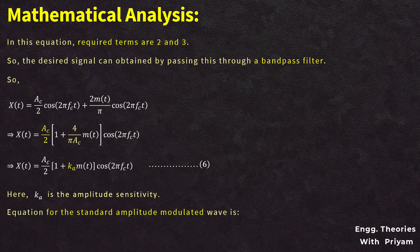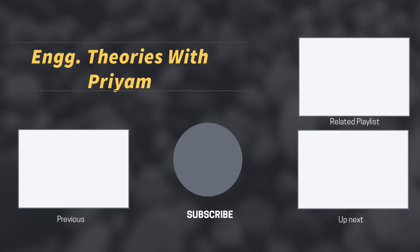The standard amplitude modulated signal is: s(t) = Ac·[1 + ka·m(t)]·cos(2π·fc·t). Comparing this with equation number 6, we can confirm that the switching modulator generates an amplitude modulated signal.